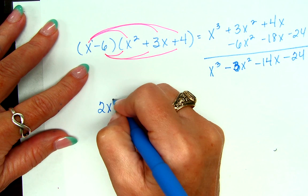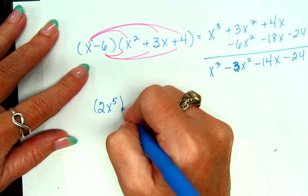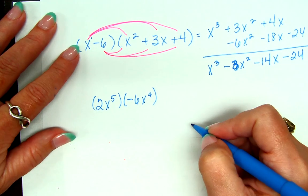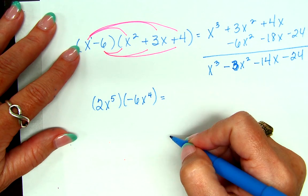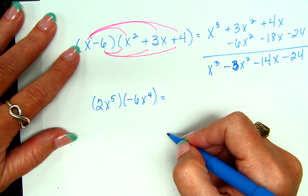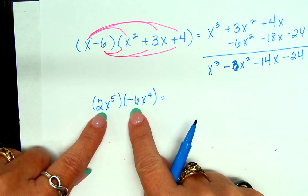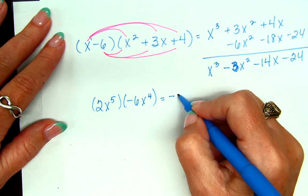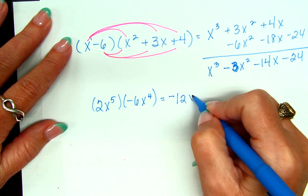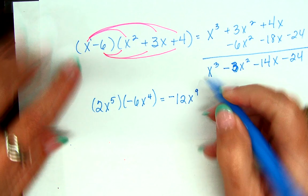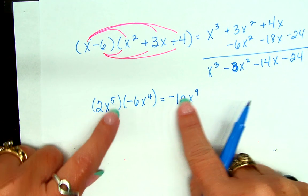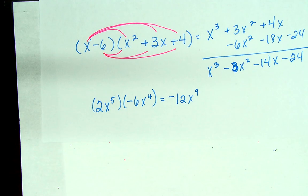2X to the 5th times negative 6X to the 4th. What's that going to be? What do I do with the 2 and the negative 6 first? I multiply. So, what do I get? Negative 12X to the 9th. Because when we're multiplying like bases, what do we do with the exponents? Add them. Add them. Any questions about that? We're good? We're good. Yes.